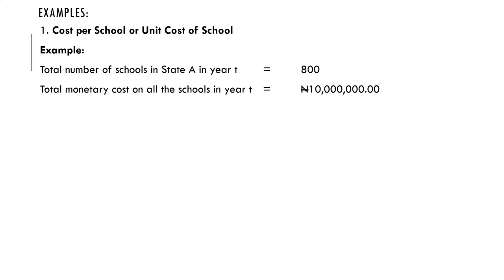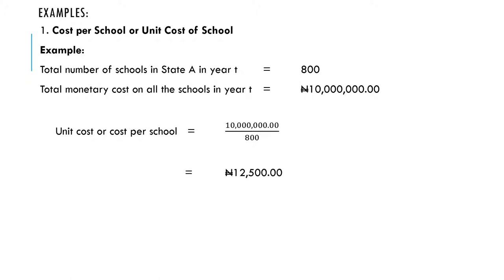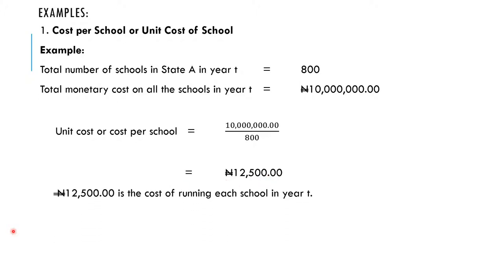The total monetary cost on all schools in year t is 10 million naira. The unit cost therefore is 10 million divided by 800, which gives 12,500 naira per school. This means for each school, 12,500 naira was spent. That is the total cost divided by the number of schools in State A.